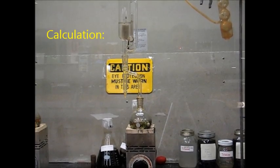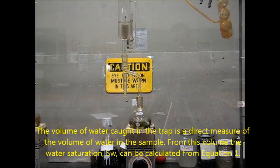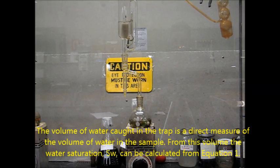Now for the calculations. The volume of water caught in the trap is a direct measure of the volume of water in the sample. From this volume, the water saturation, SW, can be calculated from equation 1. If the volume of water collected in the trap is 0, then the volume of water and the saturation of water equals 0.